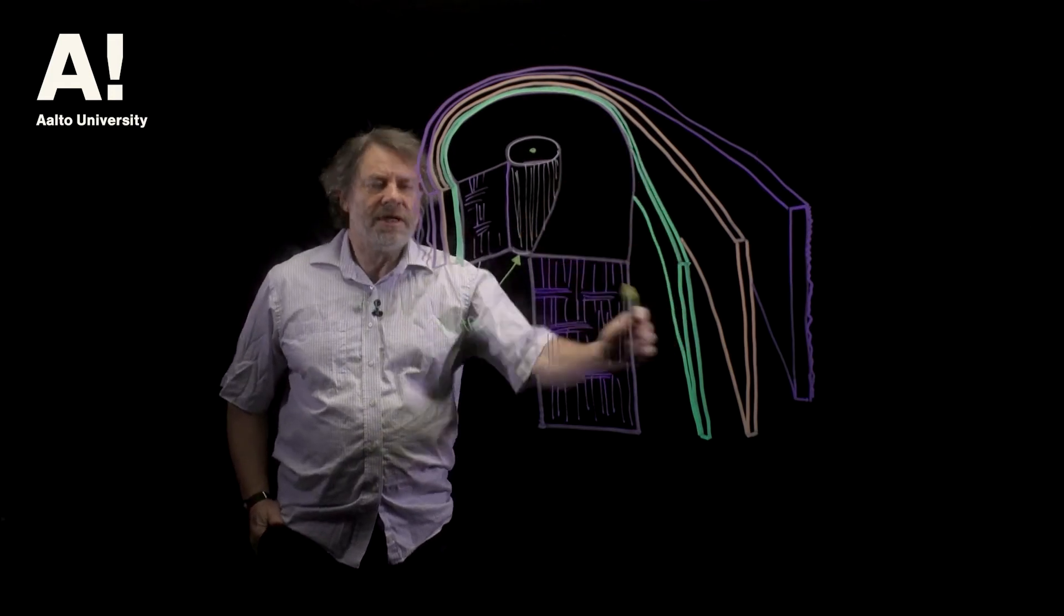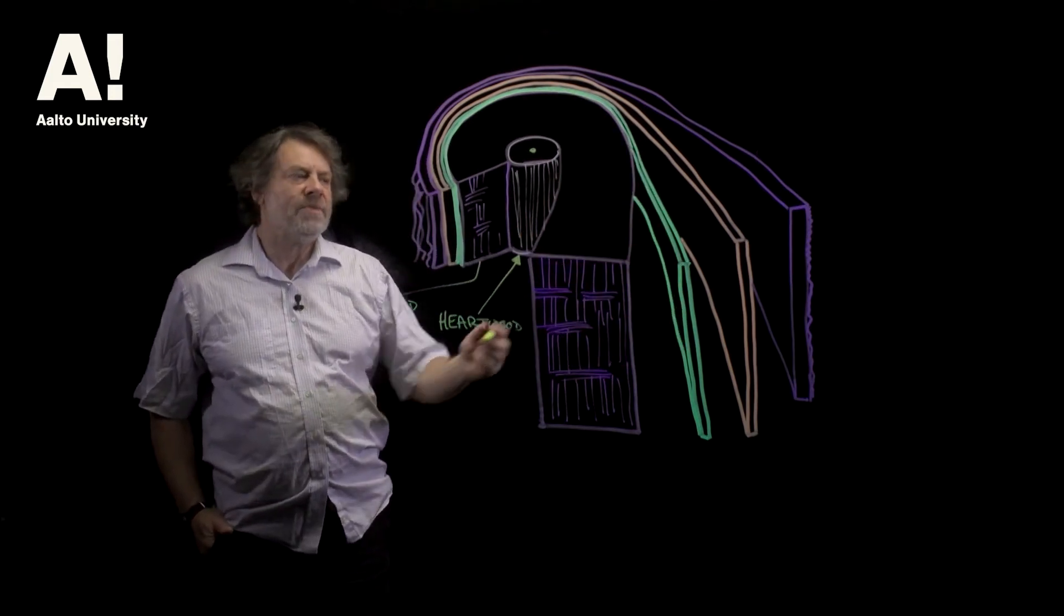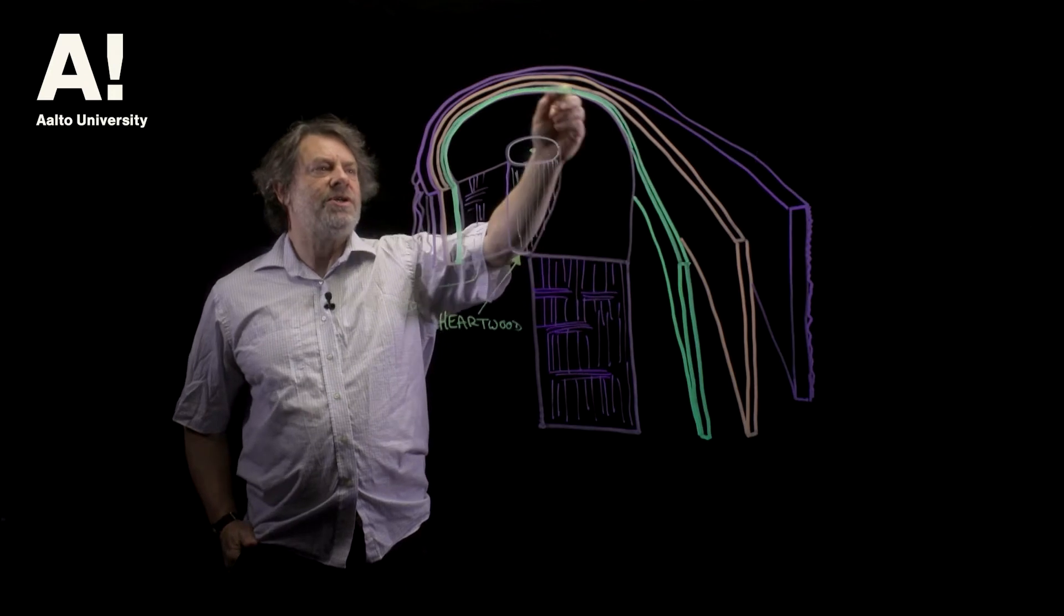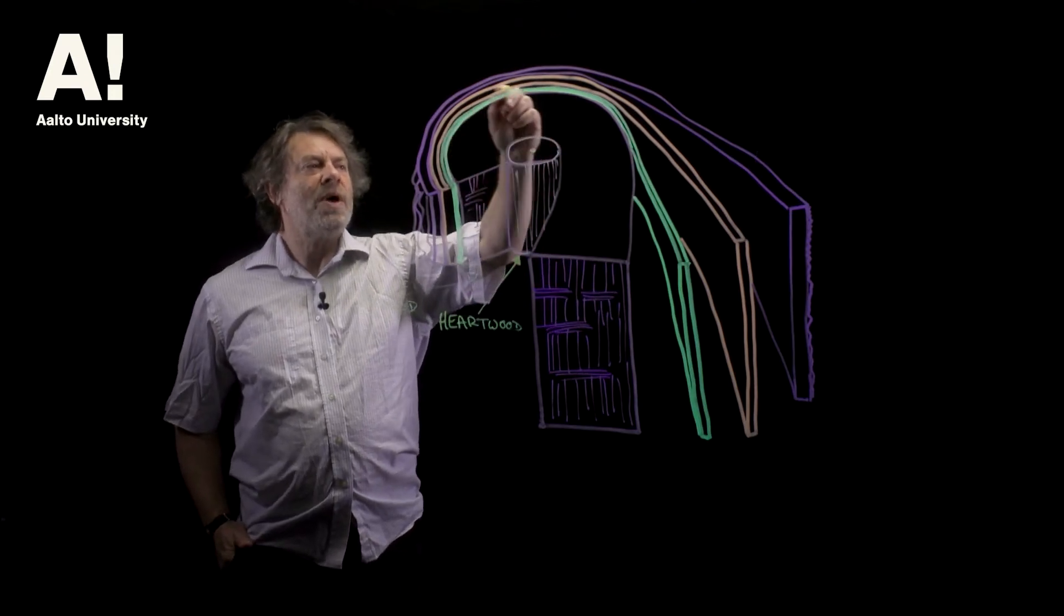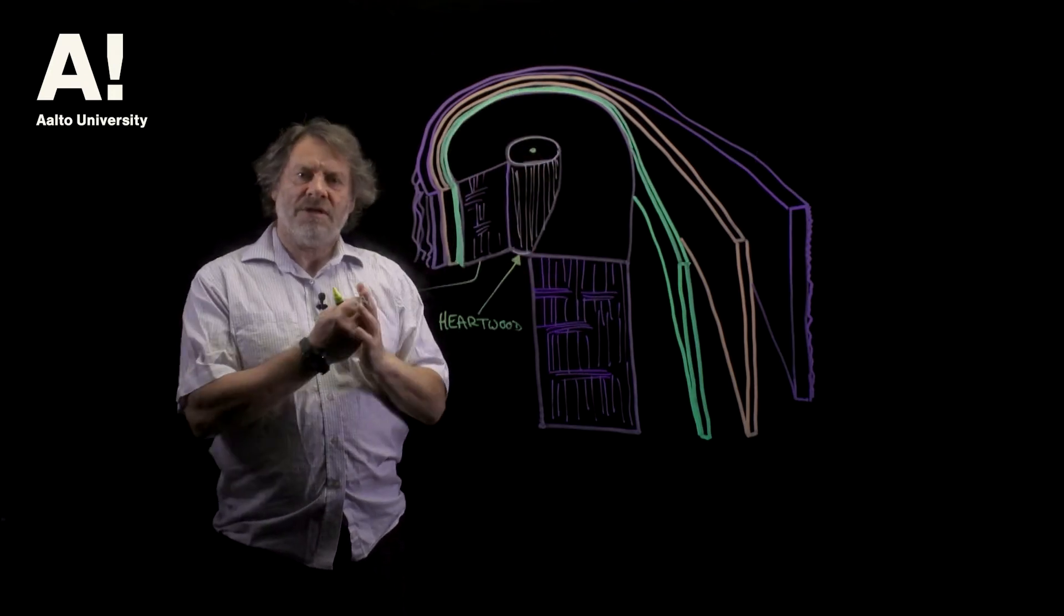this is known as the cambium or the vascular cambium. This is the region of the tree where the living cells divide.